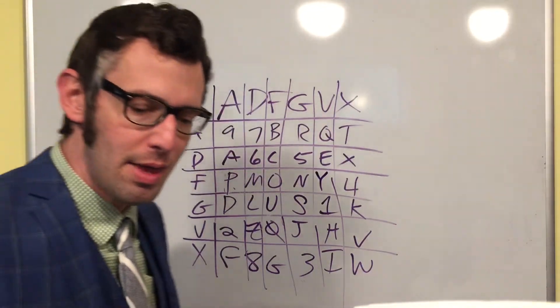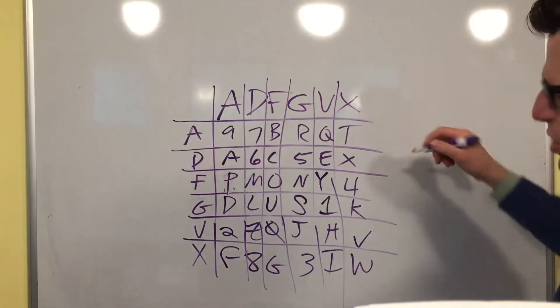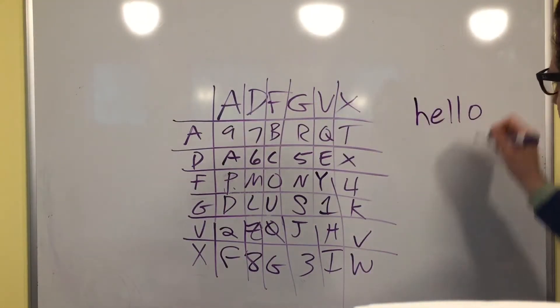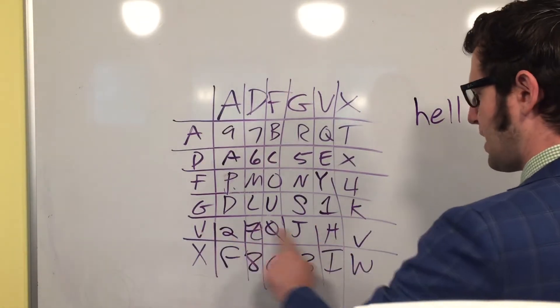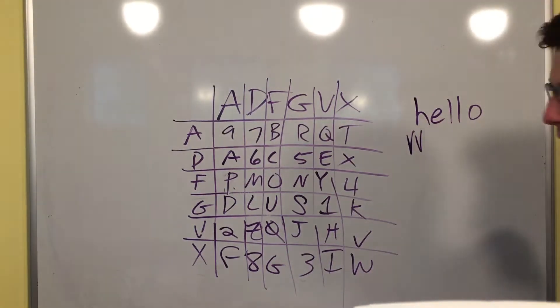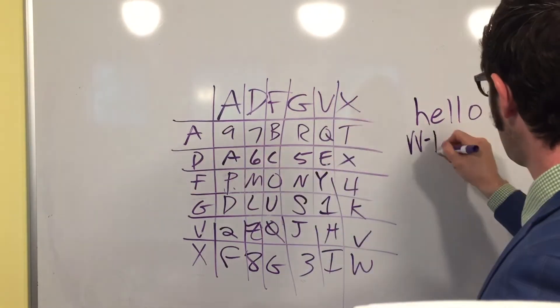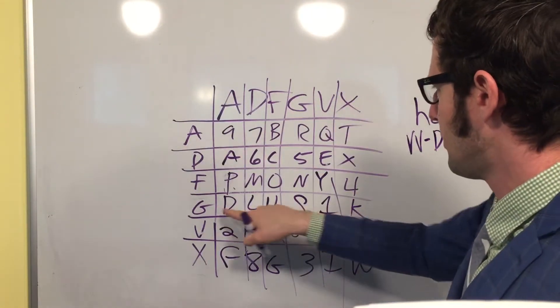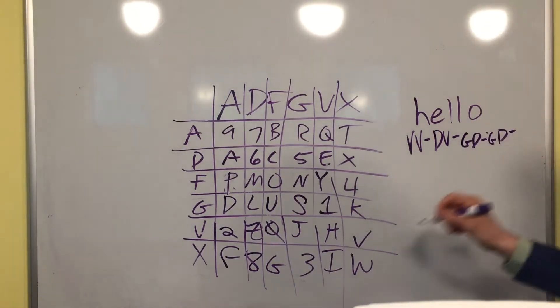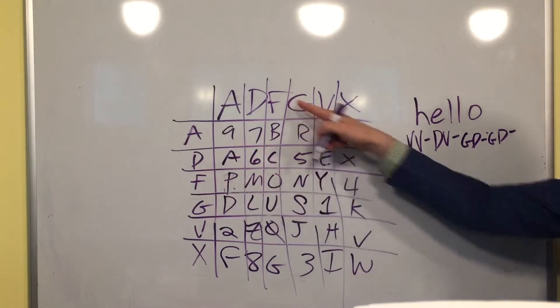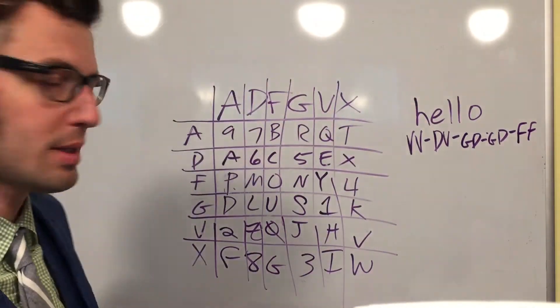Now what we're going to do is we're going to read these off by row and then column. So we need a plain text message. Let's do hello, just a short one. So this is my plain text, hello. H. I look for my H here, and H comes from V and V. So I replace H with VV. Next, I have an E. E comes from D, V. L is going to come from G, D. And another L would be another G, D. And then O is going to be F, F. This works better if I have a longer text, but I think we can still make this happen.